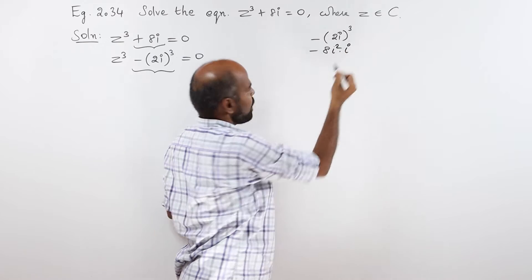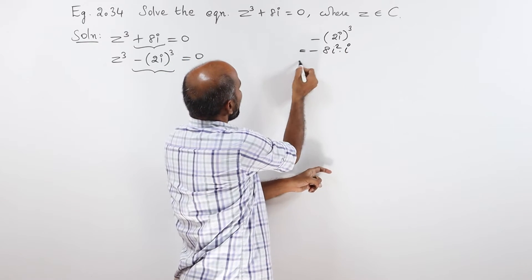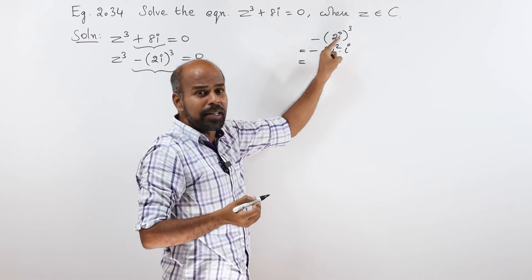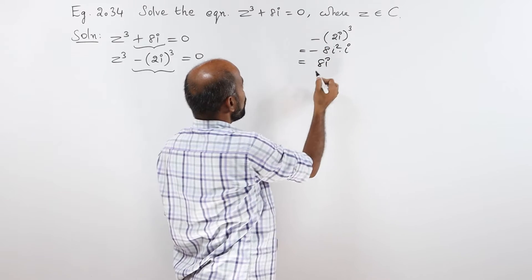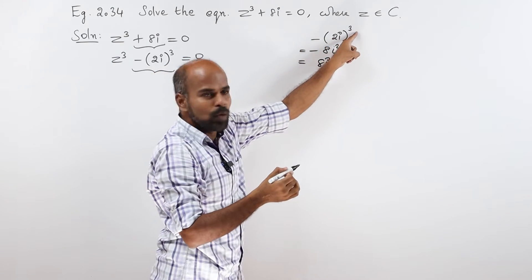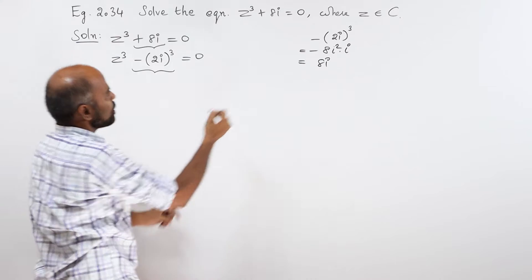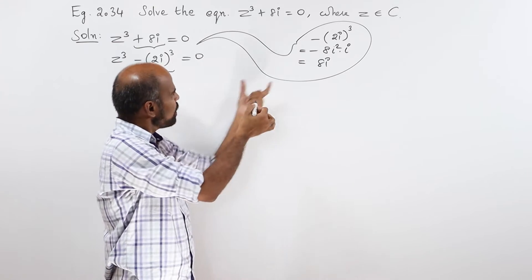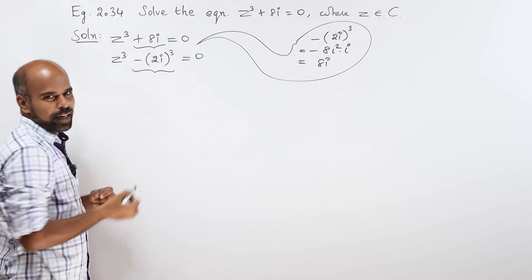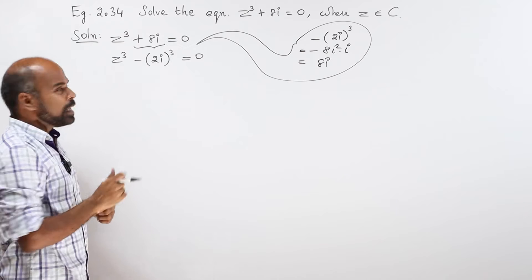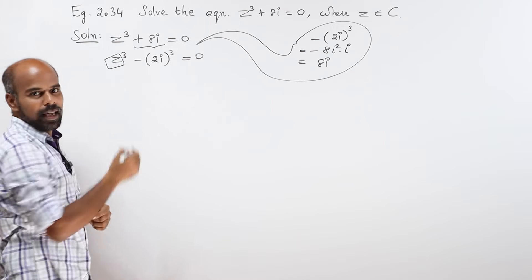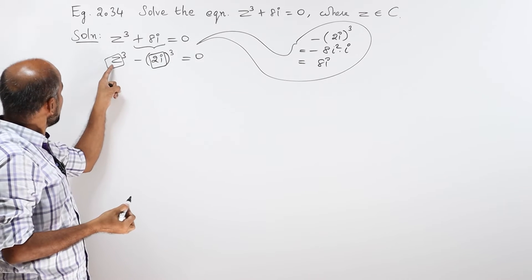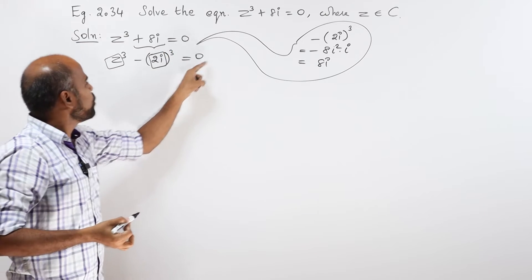i cube is i square into i. i square value is minus 1, so minus 8 into minus 1 is plus 8, plus 8 into i is plus 8i. Simplifying, minus of 2i the whole cube gives us that z cube minus b cube is equal to 0.